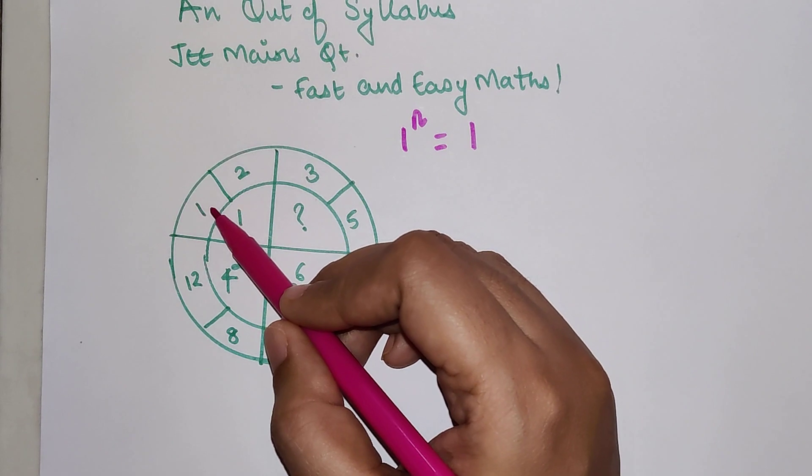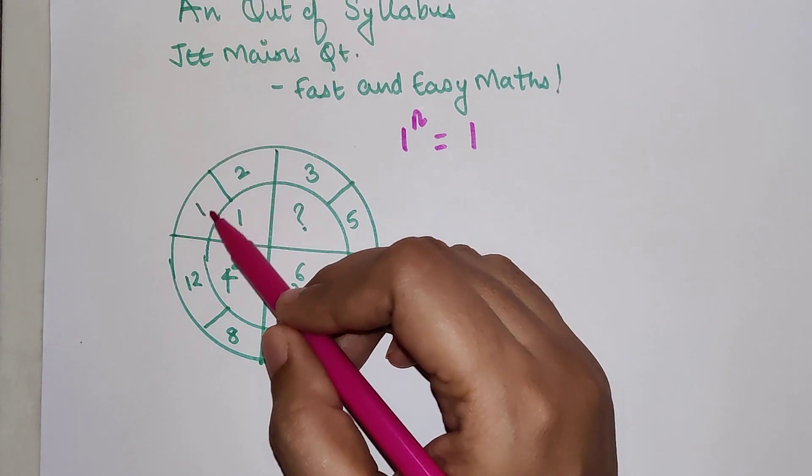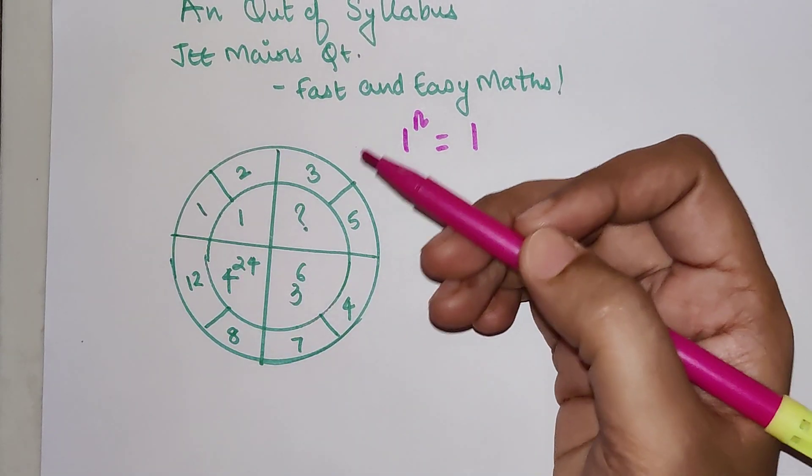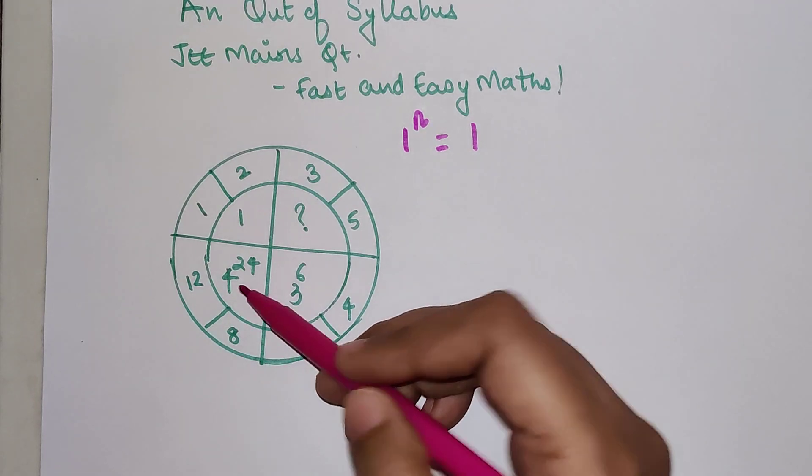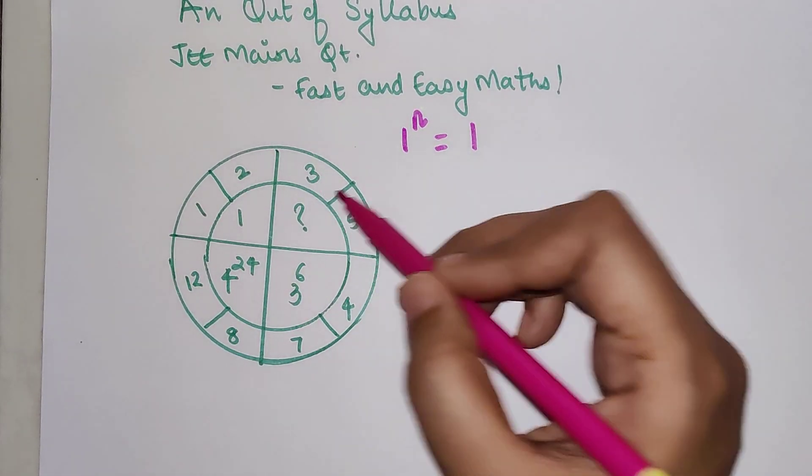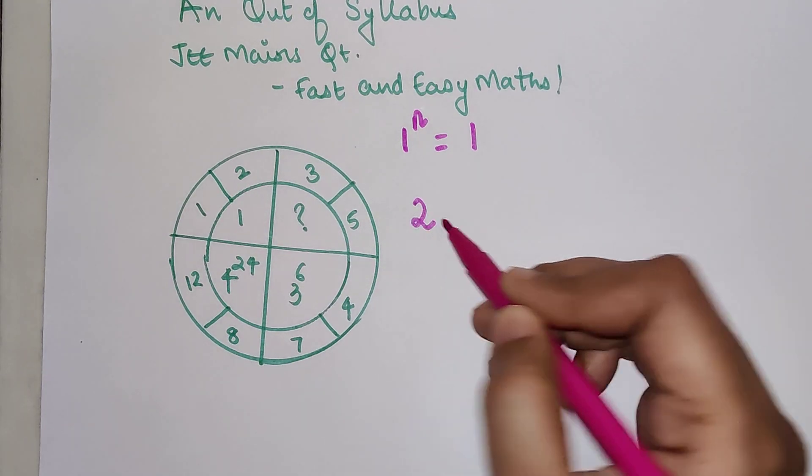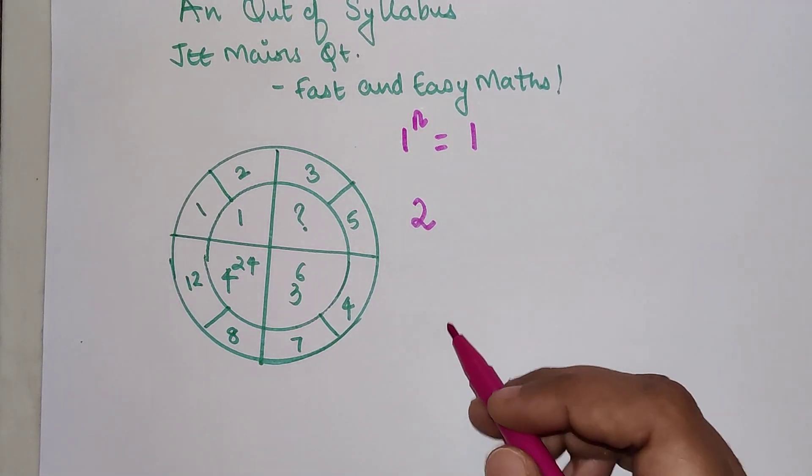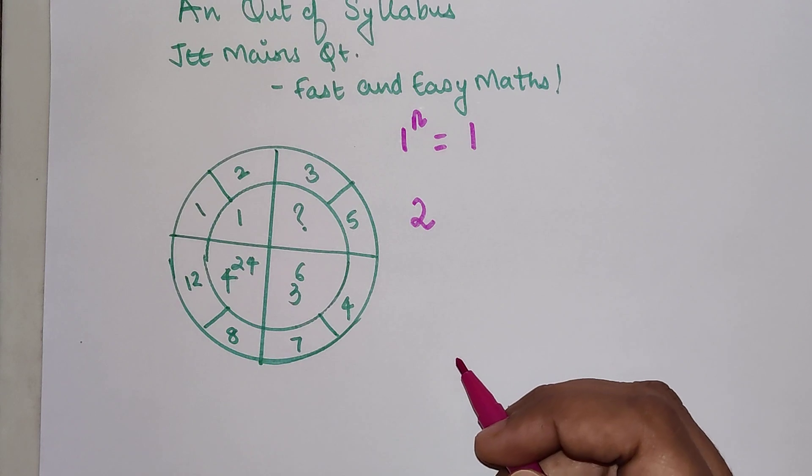Now this I am sure you all must have figured out that 1 and 2. Difference between 2 and 1 is 1 and difference between 12 and 8 is 4. Difference between 7 and 4 is 3. So here your answer will have a number 2 but the power is something which you need to find out.